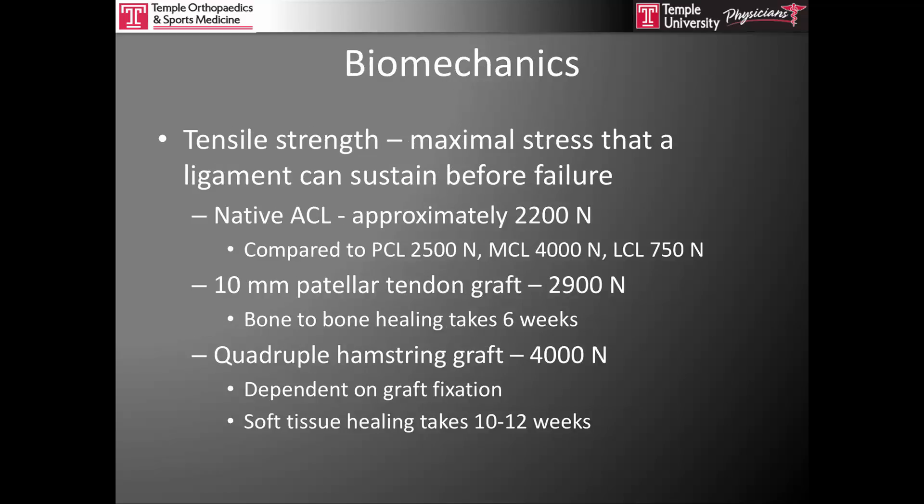In terms of biomechanics, tensile strength is the maximal stress a ligament can sustain before failure. The native ACL can withstand approximately 2,200 newtons of force, which is roughly equal to the PCL at 2,500 newtons. The MCL is substantially stronger, able to withstand approximately 4,000 newtons, while the lateral collateral ligament can only withstand 750 newtons in isolation, though other structures support the LCL and increase overall strength to varus stress.